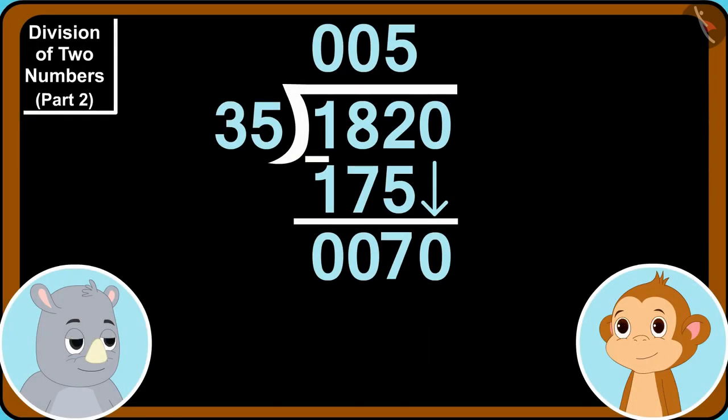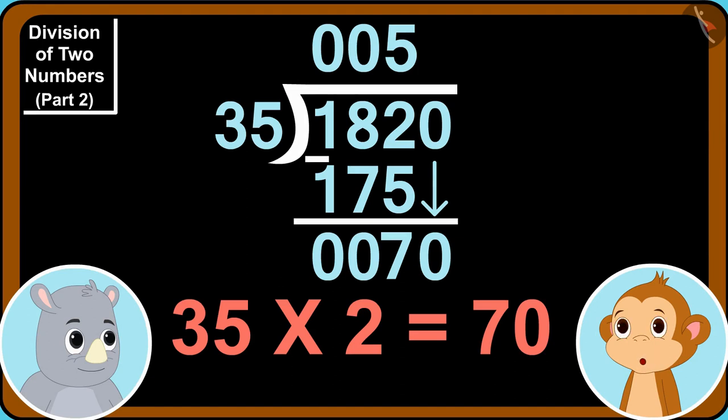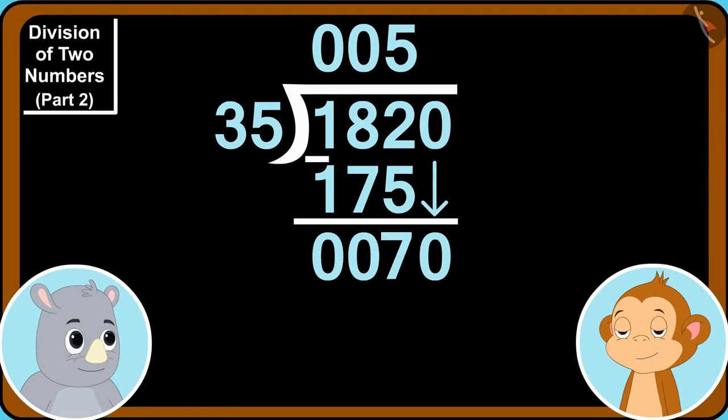Absolutely. 35 times 2 is 70. Babban said to Gaggu. Well done Babban.